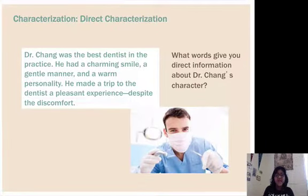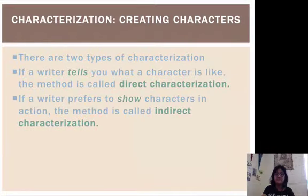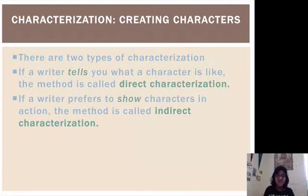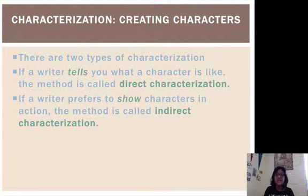However, later the author might choose to develop Dr. Chang more thoroughly through indirect characterization. In characterization, authors are creating characters — there are two types. If a writer tells you what a character is like, that's direct characterization. If the writer shows you through action, the method is called indirect characterization. Thinking of Amaya and Dr. Chang, it's not just about what they're directly like — they would be developed further in the story through indirect characterization, which we're going to talk about next.